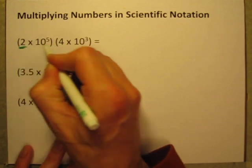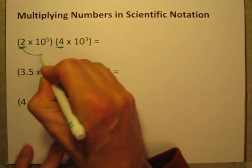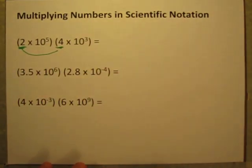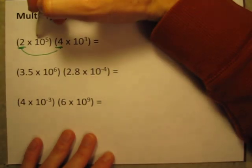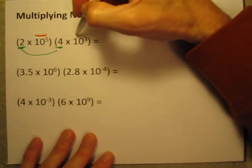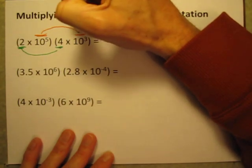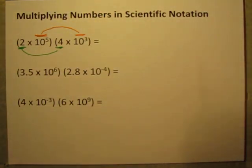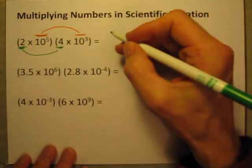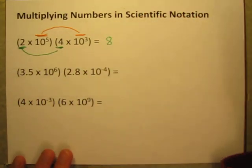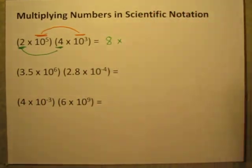First, I could just do the 2 times 4. And then I can do the powers of 10. I can do this 10 to the 5th times 10 to the 3rd. So when I do that, 2 times 4 is easy enough. That's just simply 8. So this is going to be 8 times.